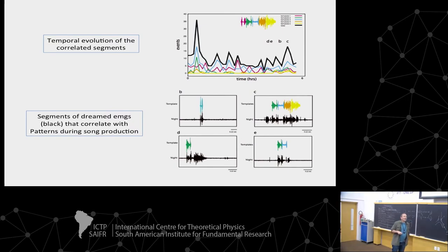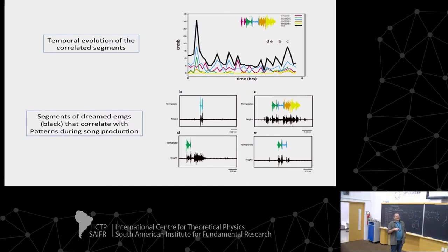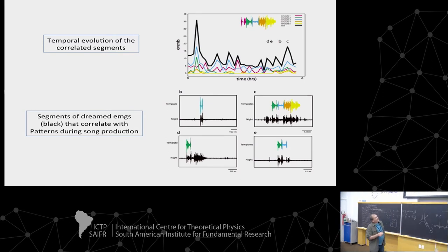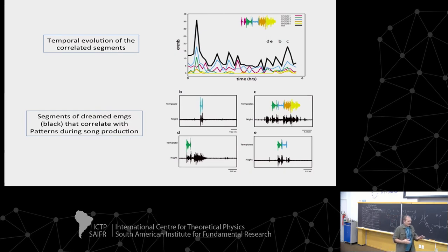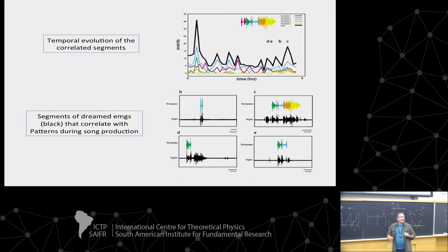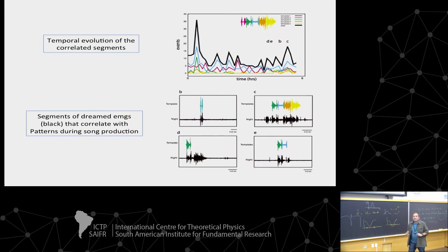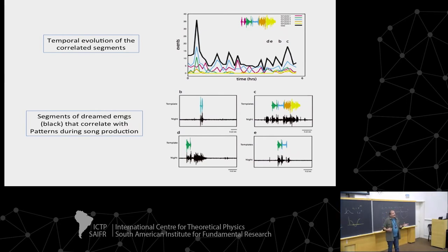I'm going to show you a table in a few minutes. What Mauro is asking is: this line showing song-like activity correlated with a specific pattern — what percentage of the total activity does it represent versus the activity that isn't identifiable? I'm going to talk about that in a minute. This is a very good question because consolidation suggests this should cover most of what is practiced.